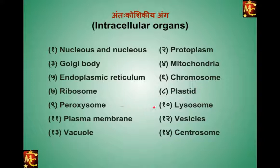Peroxisomes and lysosomes are also very important parts. Lysosomes are called the suicidal bag. The plasma membrane is one of the very important parts of the cell — it provides safety, it protects the cell, and it is involved in several activities which will be explained in detail in next videos. Vesicles and centrosomes are also common intracellular organs in eukaryotic cells.